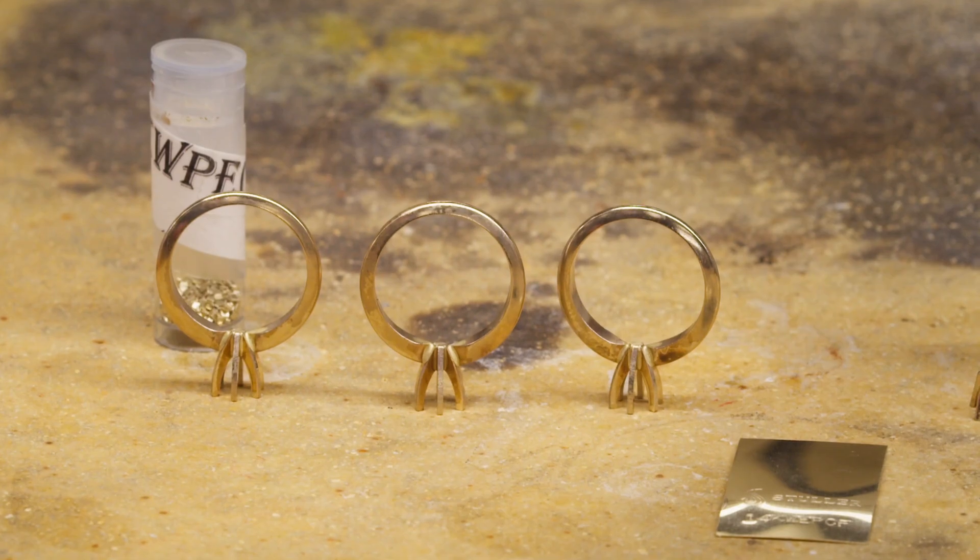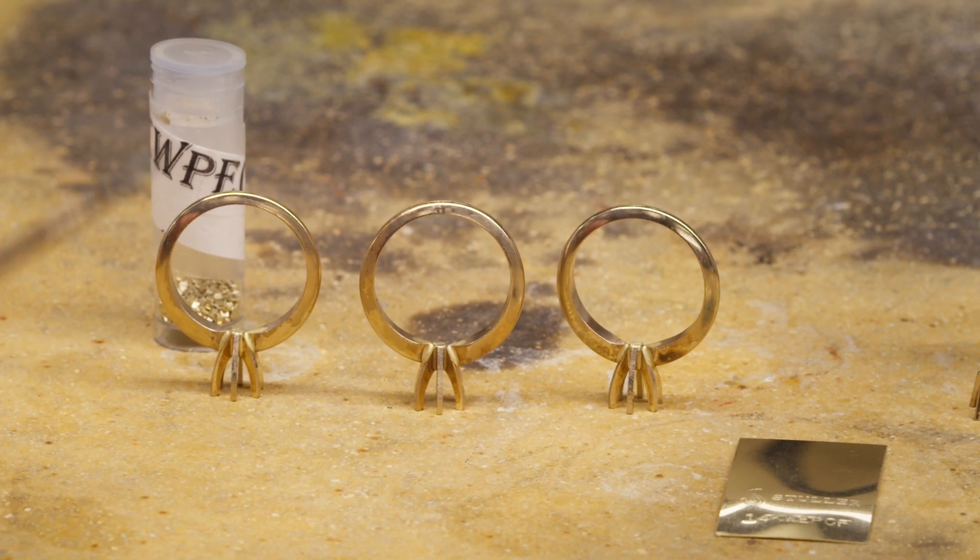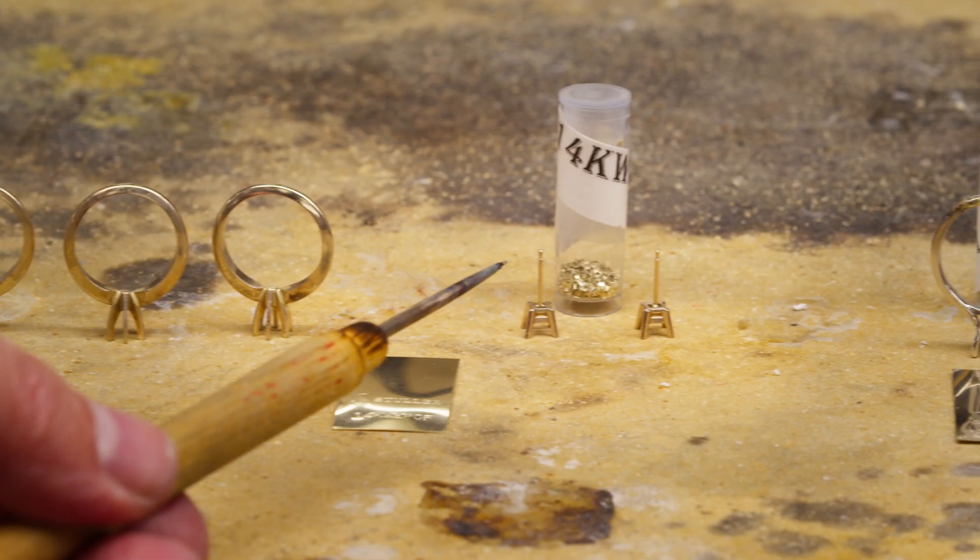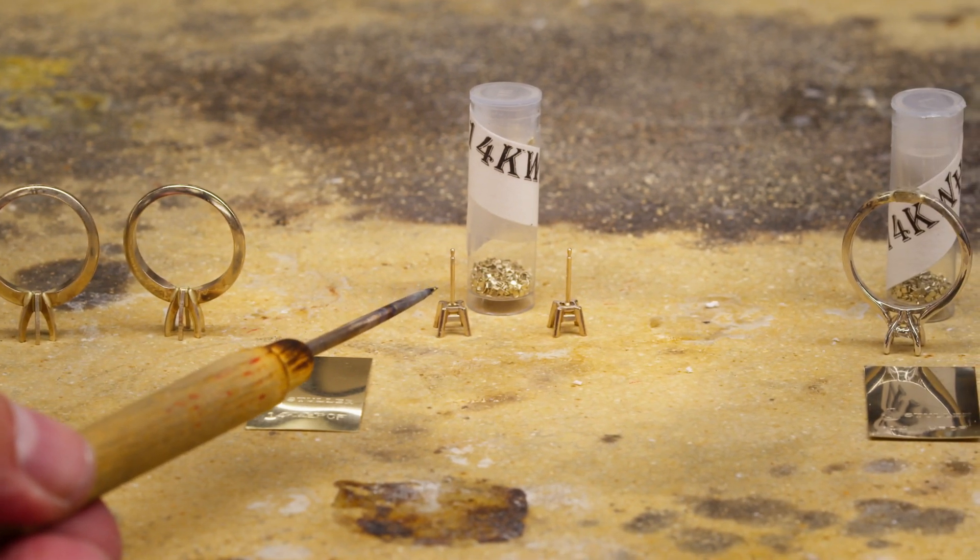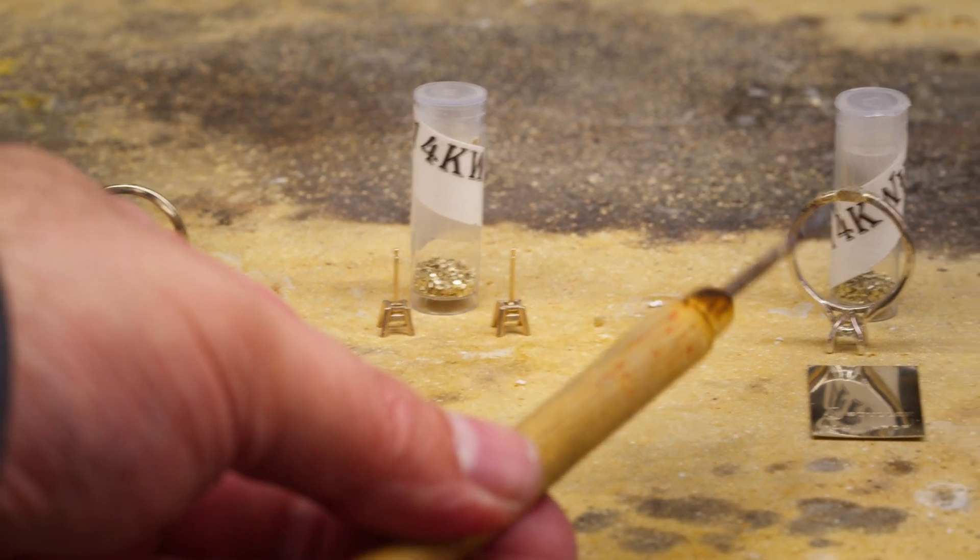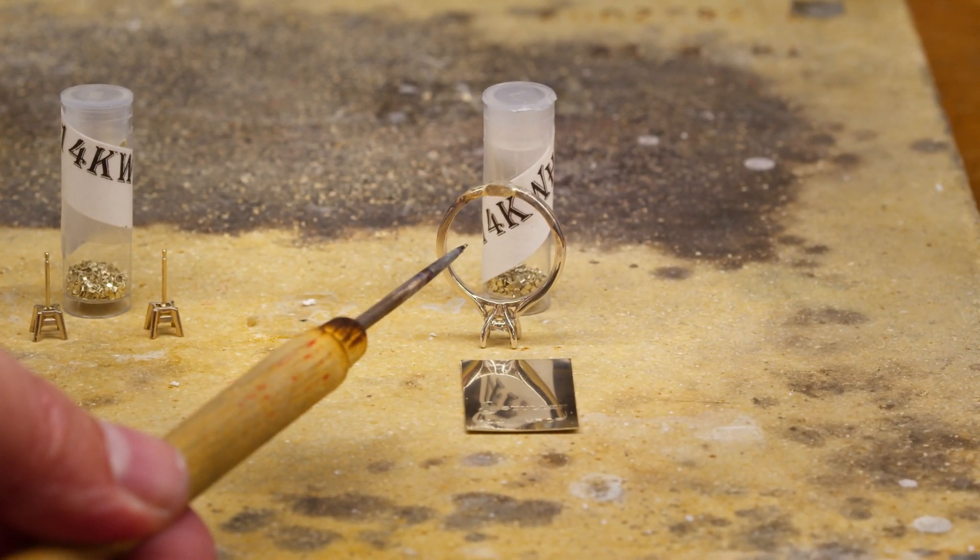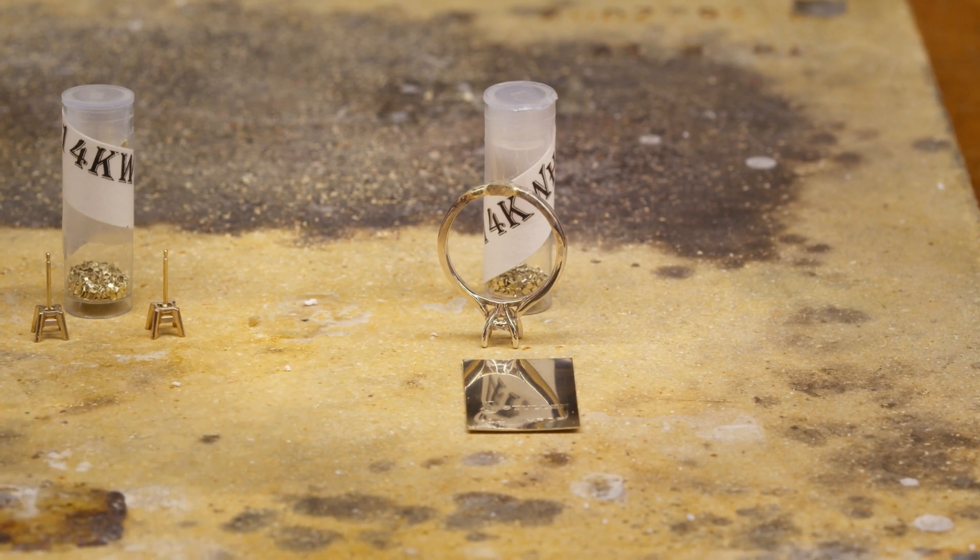When assembling our solitaire rings, we typically use 14 karat white easy solder chipped or coupon for both the shank and the head. This allows us to get a clean and secure bond during assembly. We also use 14 karat white easy solder or coupon when attaching posts to earrings. For ring sizing, we switch to 14 karat white or yellow hard solder dependent on the karat quality to ensure a durable and long-lasting joint.